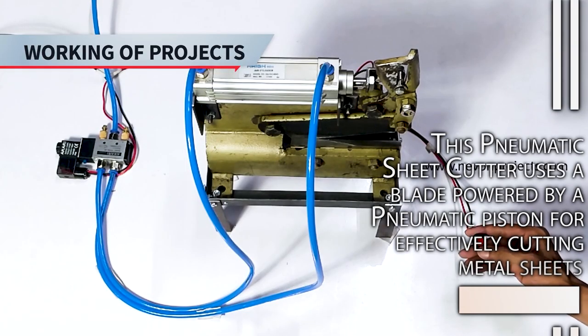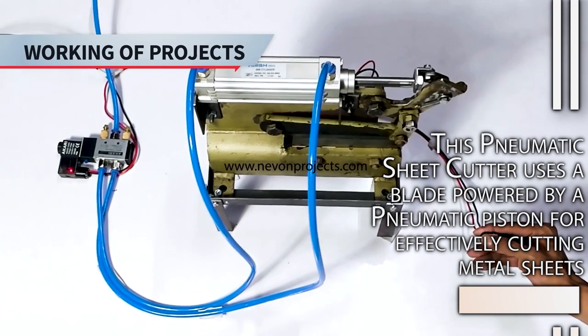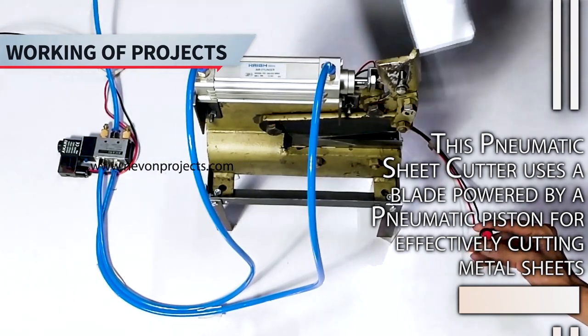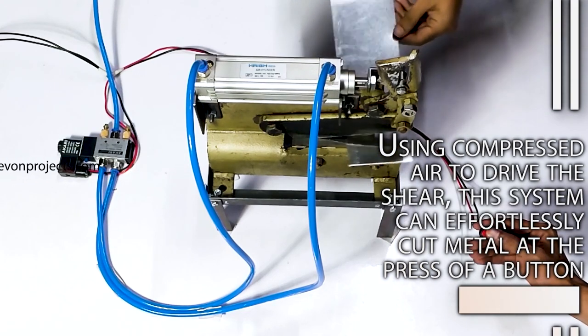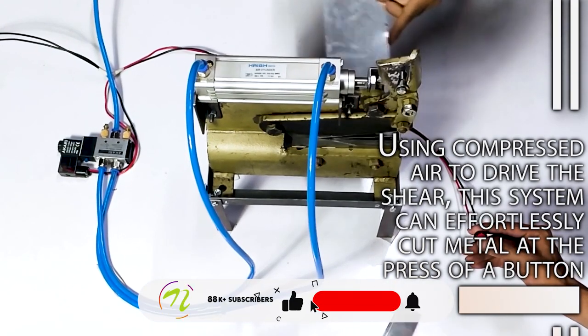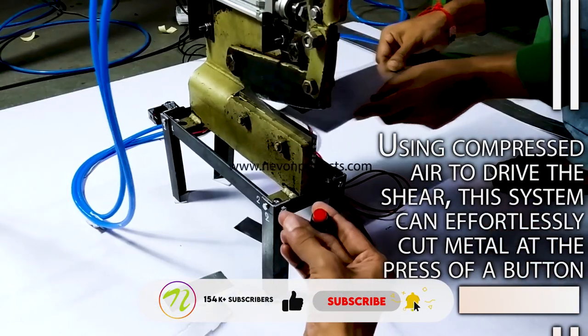This pneumatic sheet cutter uses a blade powered by a pneumatic piston for effectively cutting metal sheets. Using compressed air to drive the shear, this system can effortlessly cut metal at the press of a button.